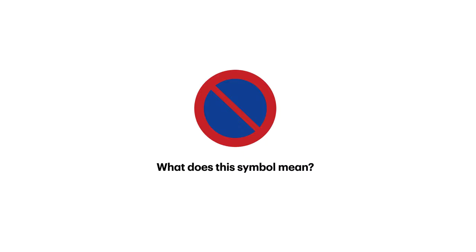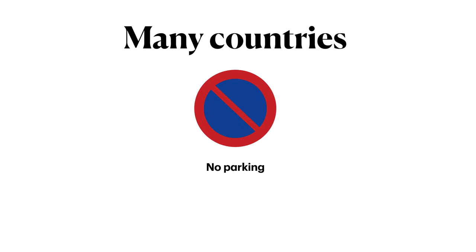Let's next look at a different symbol: a circle with a red outline, a blue center, and a red strike through the center. Have you ever seen this symbol? If so, where, and what did it mean in that context? While this symbol is not commonly found in the United States, in many countries this is a conventional symbol meaning 'no parking.' So in the context of driving and traffic, this symbol means you can't park here — it's not allowed.